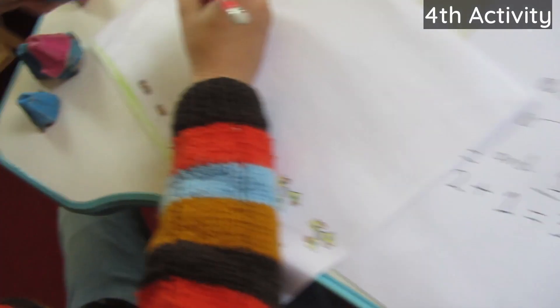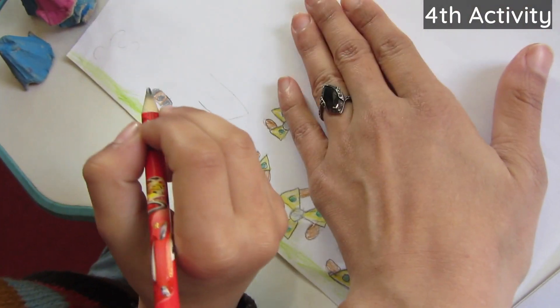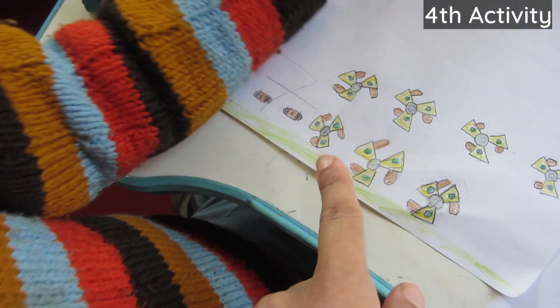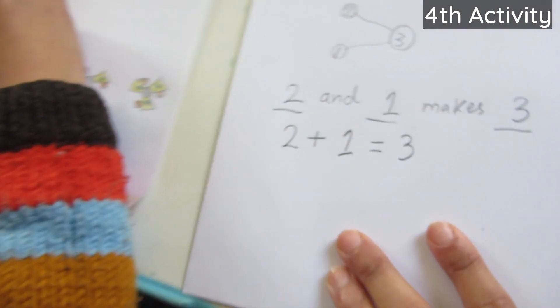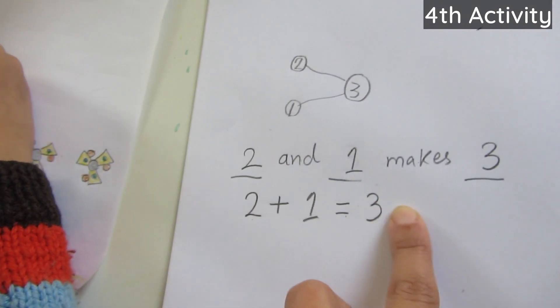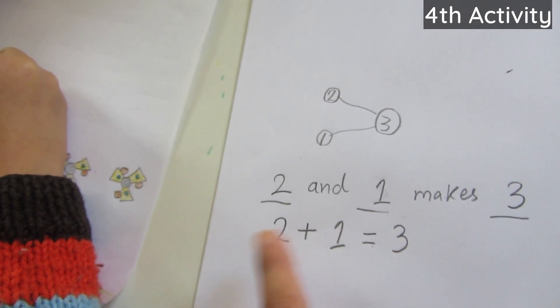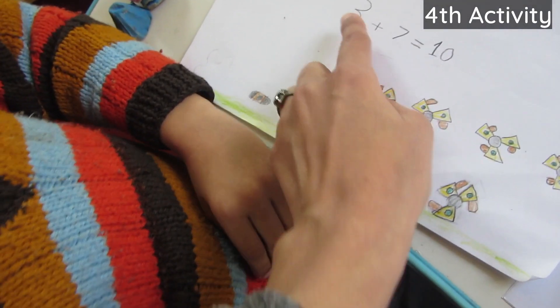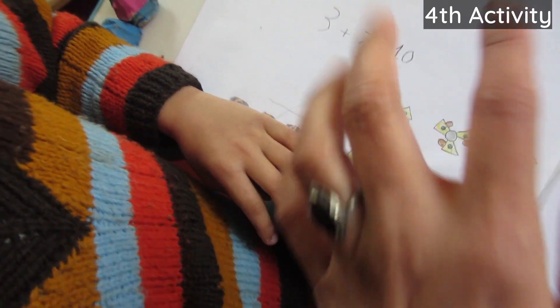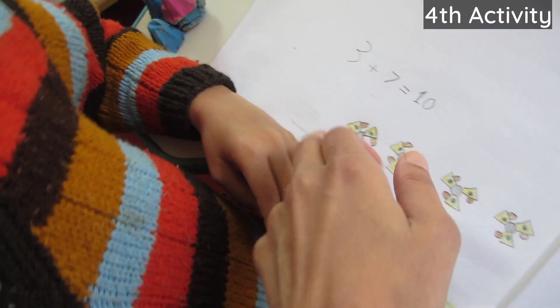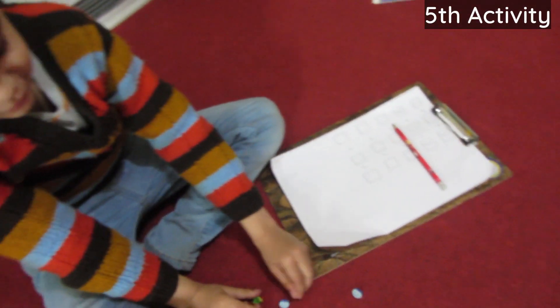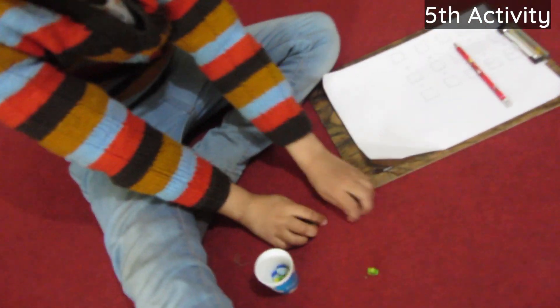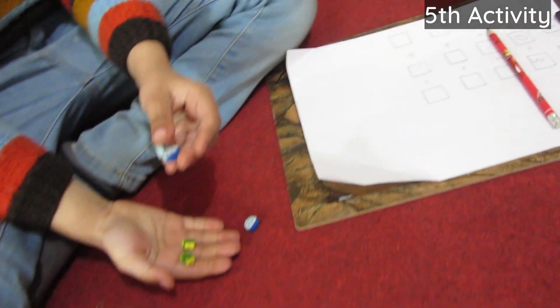Now I will write the addition sentence for your story. This is an addition sentence: 3 plus 7 equals 10 — it is the same as saying '3 and 7 makes 10.' Now Yaya got a tally face card with 3. Can you fill in this addition sentence? Count all of them.